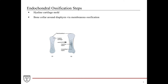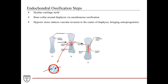The bone collar actually forms by membranous ossification, in that some of the cells in the perichondrium will differentiate into osteoprogenitor cells, which then give rise to osteoblasts, which then start to lay down the bone tissues. If we were to make a transverse section through the diaphysis, we'd see a thin layer of bone tissue forming the bone collar, with cartilage tissue in the inside center. Once the bone collar is in place, it cuts off the diffusion of nutrients into the center of the cartilage, causing some chondrocytes to die under hypoxia.